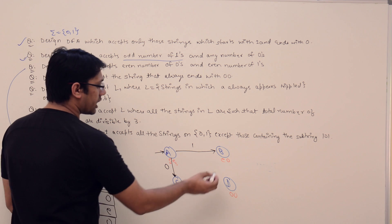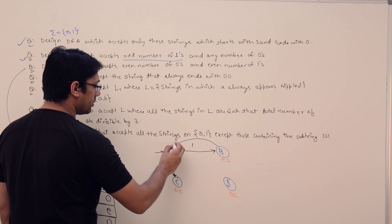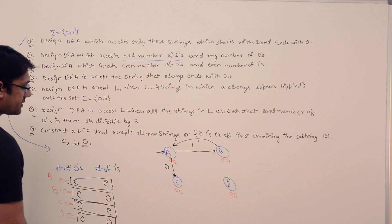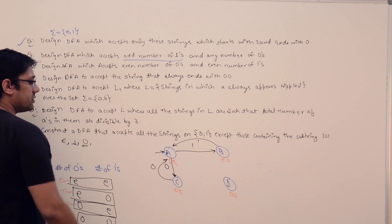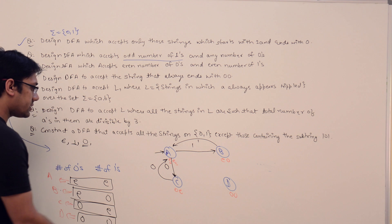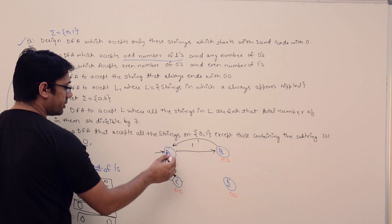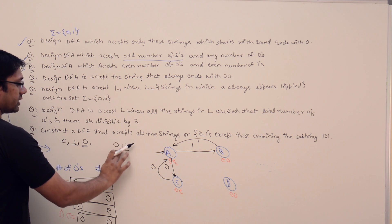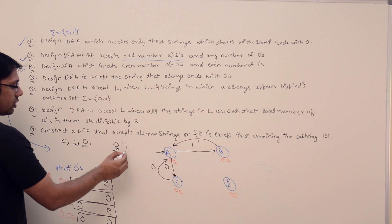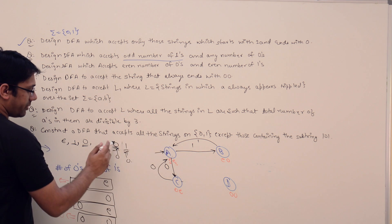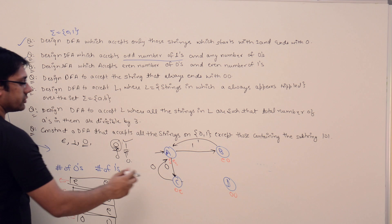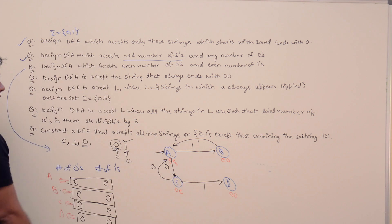If you are at state B and get another 1, the number of ones becomes even again, so you return to state A. At state C, if you get another 0, the number of zeros becomes even again, returning to A. If at state C you get a 1, for example the string '01', then zeros are odd and ones are also odd, so you transition to state D. At state B, getting a 0 makes zeros odd, also leading to state D.